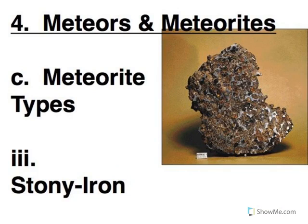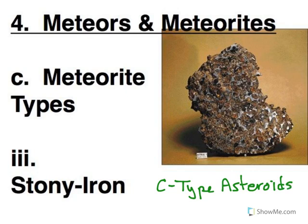The rarest kind are called stony irons — they're a mixture of stone and iron. Recall that our C-type asteroids are composed of carbon, but also stone and iron. So these are from those rare, pristine asteroids, the ones that have not gone through changes. Here you can see in the picture you've got this mixture — a lattice of iron with rocky stuff in between, so it's an even mix of stone and iron. These are one of the prettiest kinds of meteorites, and because they're more rare, they are also more expensive.